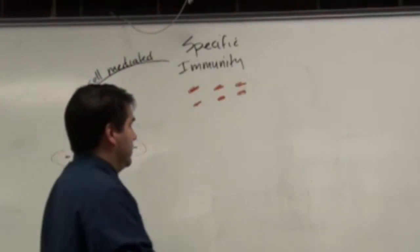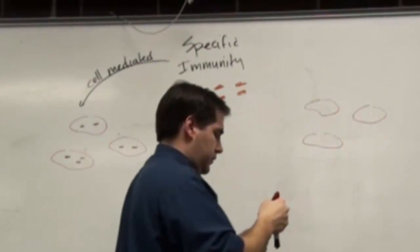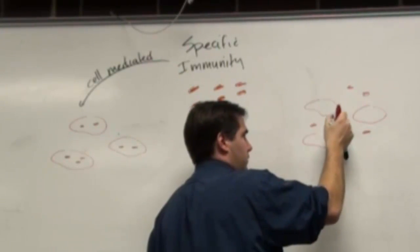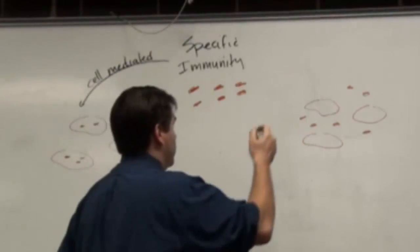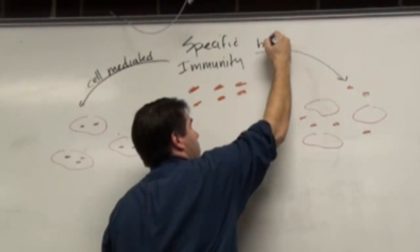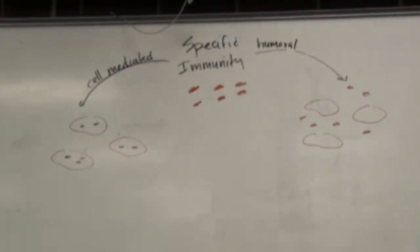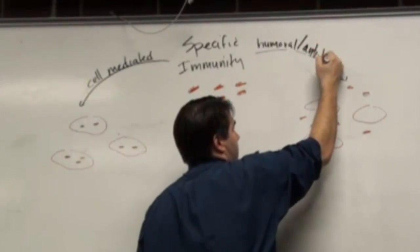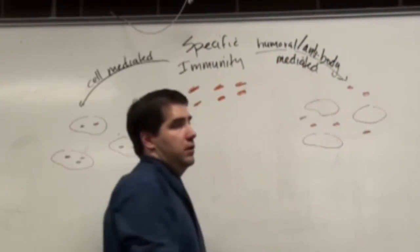That bacteria could still be loose. It could be outside of the cells. You still want to kill it. This is called humoral. As in humor, the old Greek word for humor is the fluids of the body. So it's still in the fluids of the body. Or it's also called antibody mediated. Because that's how it's going to kill.